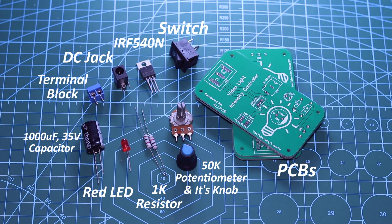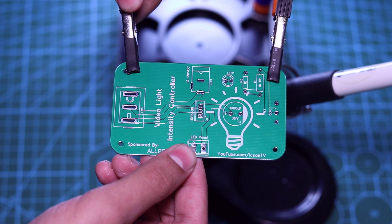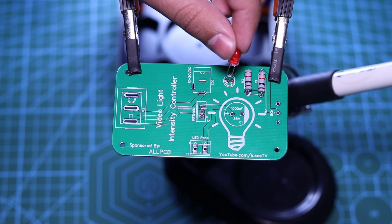So, these are all the components that you will need to assemble the controller of the video light. Now, I am gonna solder all the components to the PCB according to the schematic.